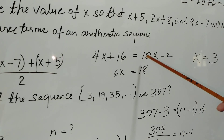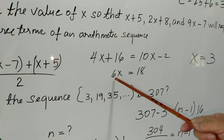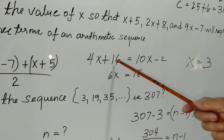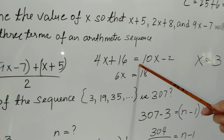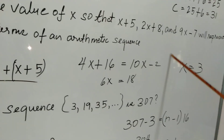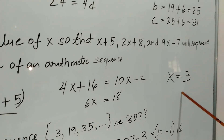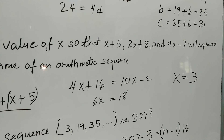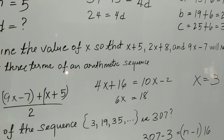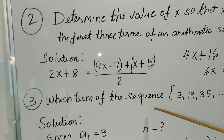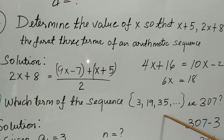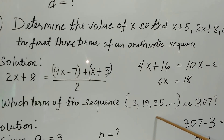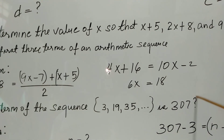Multiplying both sides of the equation by 2: 2 times 2x plus 8 gives 4x plus 16. Combining terms in the numerator: 9x plus x equals 10x, and negative 7 plus 5 equals negative 2. So 10x minus 4x equals 6x, and 16 plus 2 equals 18. Dividing both sides by 6, we get x equals 3.